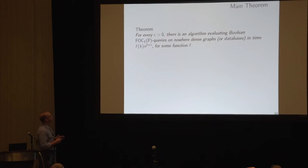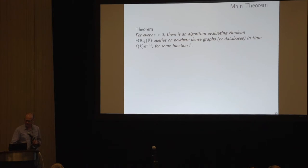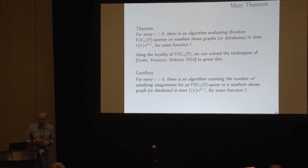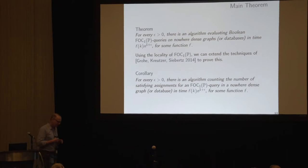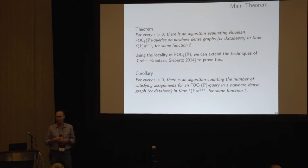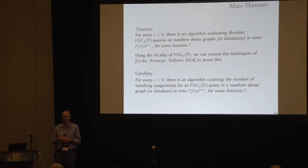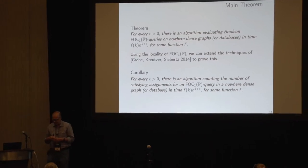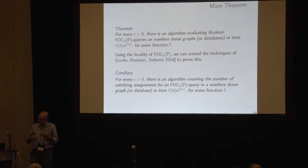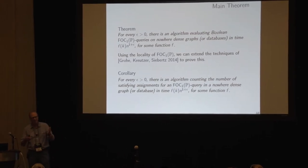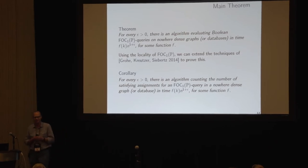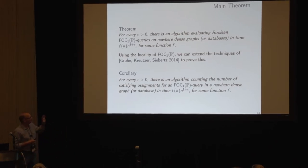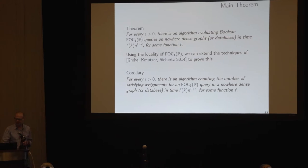It's exactly the same result as for first-order before, extended to counting queries. A nice corollary is that we can also count the number of tuples satisfying formulas in nowhere dense graphs — this was only known for planar graphs before for first-order logic. Counting tuples is important if you want to compute probabilities or do any quantitative reasoning. That just falls out of our results because we have the counting terms there.